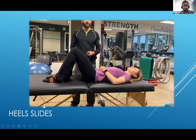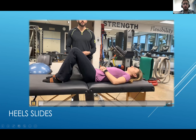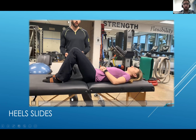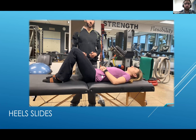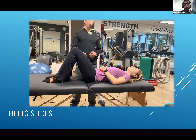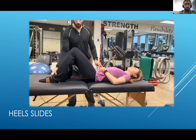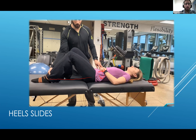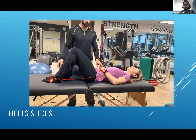Next is the heel slide exercise — a buildup variation of the TA contraction. Brace your belly button down towards your spine, lying on your back, then slide one leg out while holding that contraction, and bring it back up. Do 10 each leg.